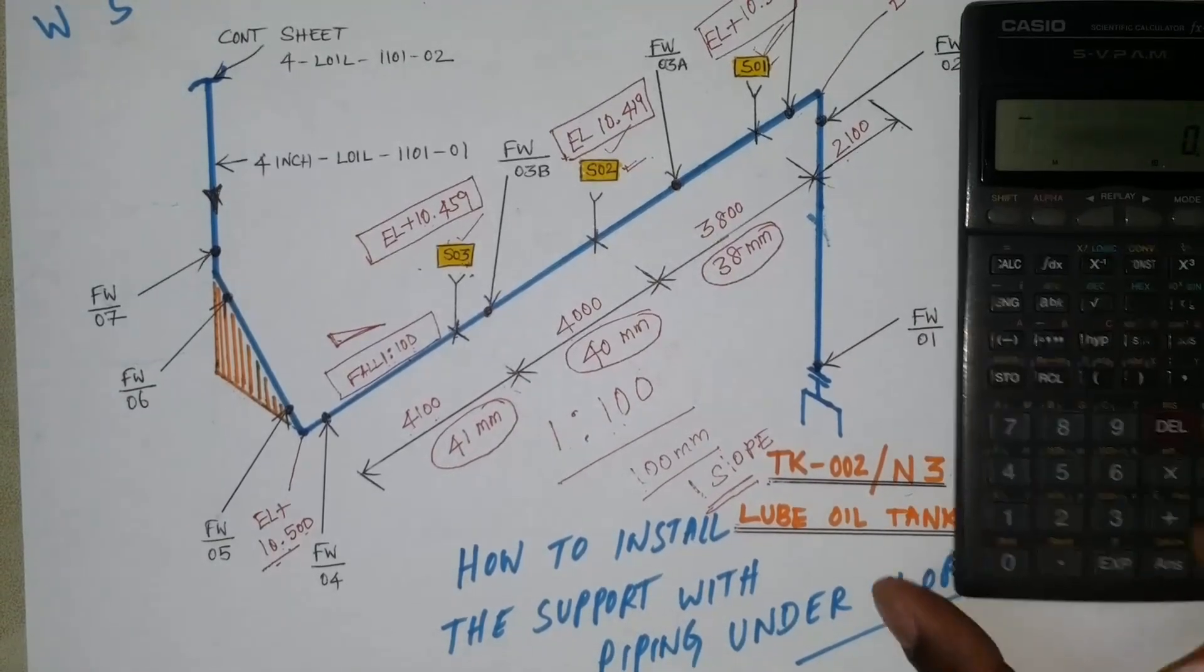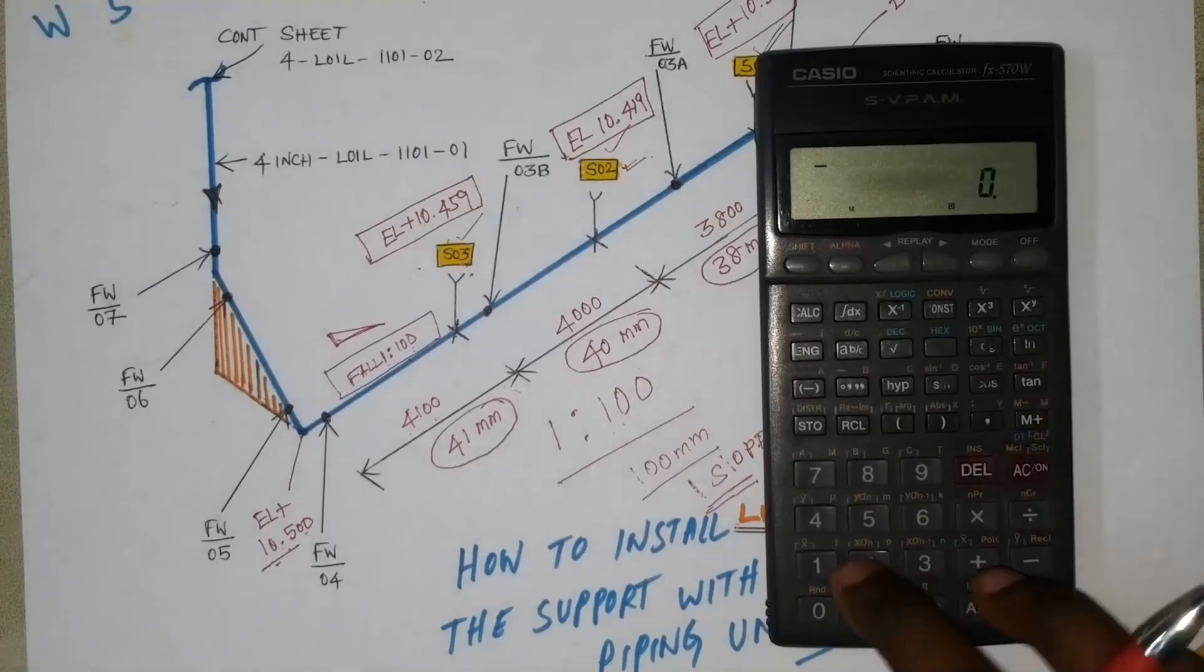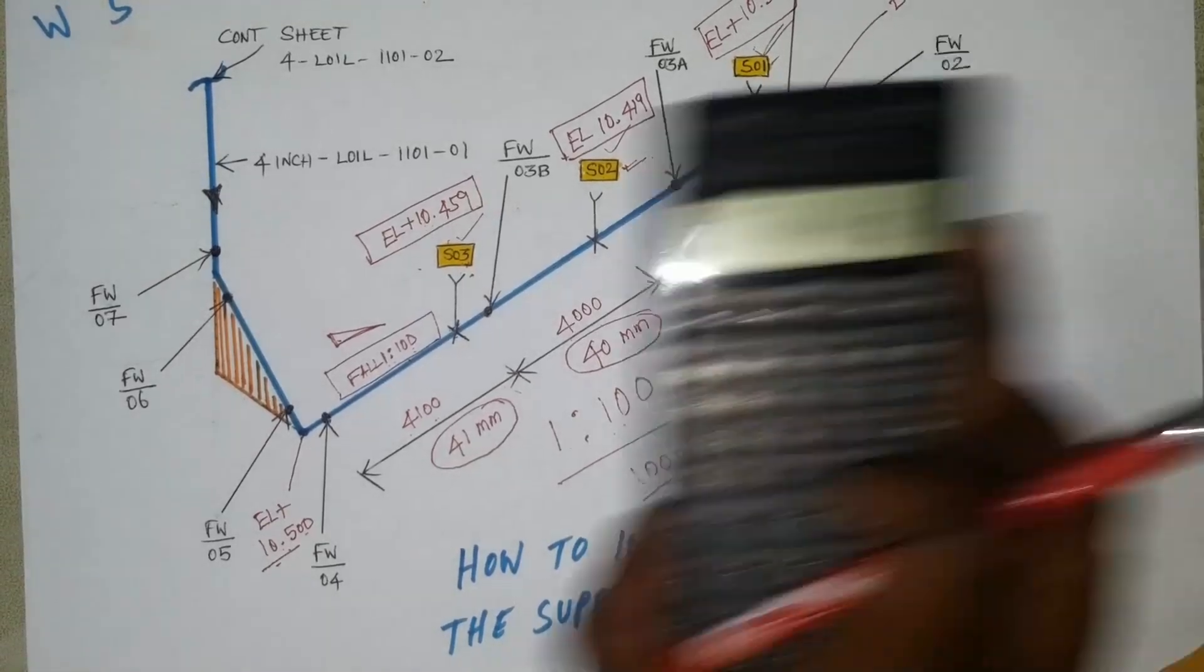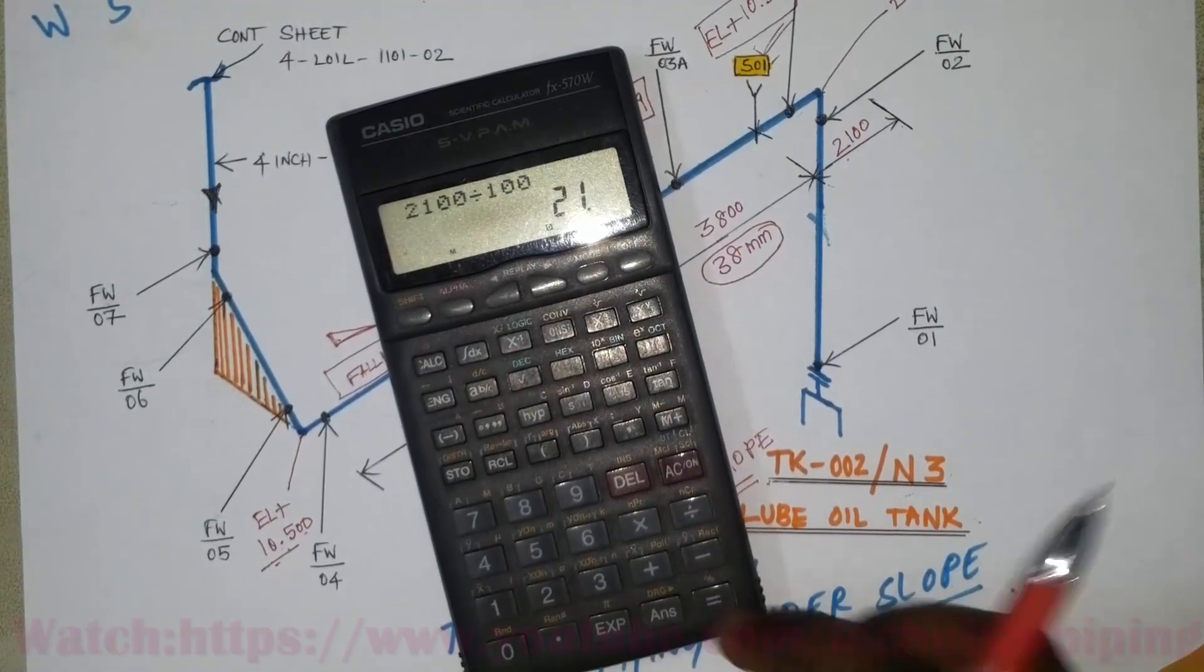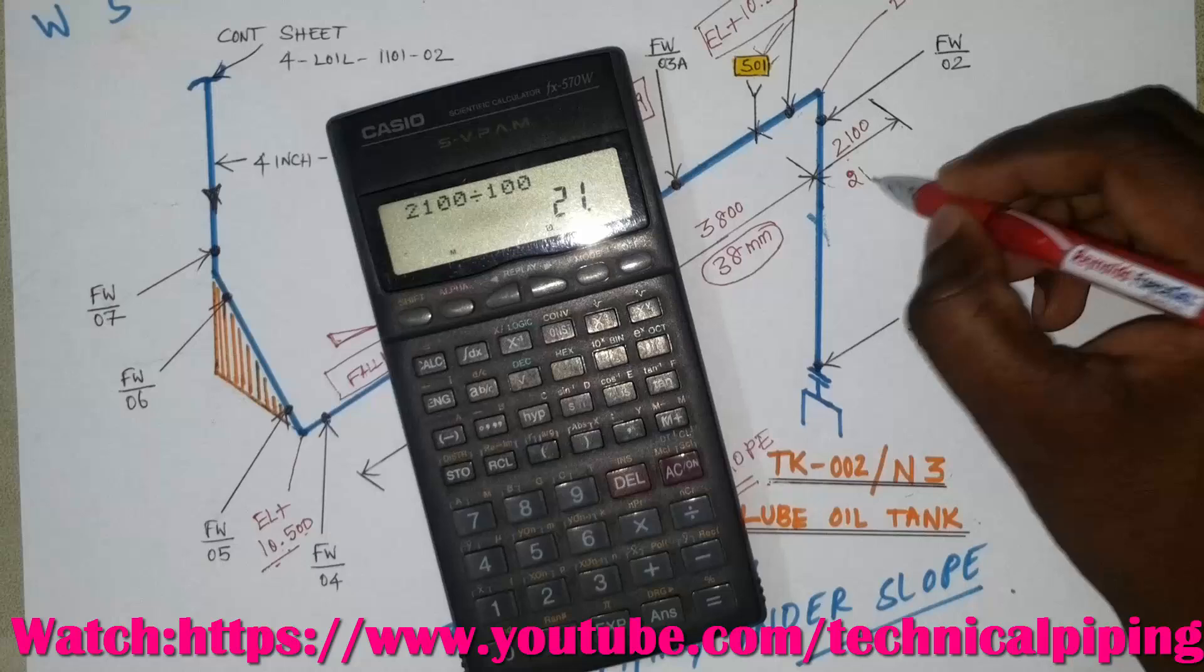So 2 meter 100 divided by 100 is 21 mm. We have to decrease the elevation from support number 1 to this elbow.